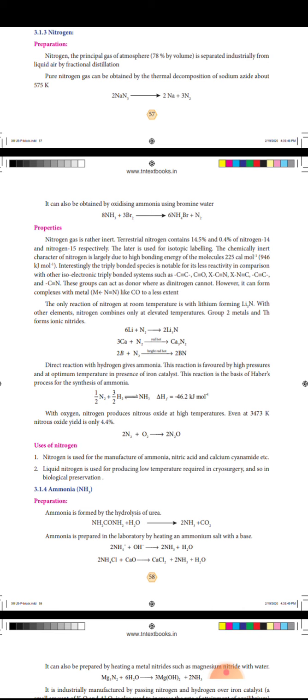Uses of nitrogen: First, nitrogen is used for the manufacture of ammonia, nitric acid, and calcium cyanamide.